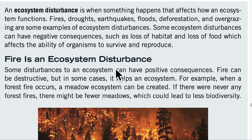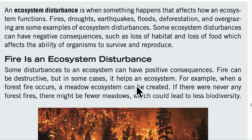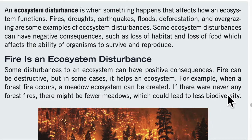Fire is an ecosystem disturbance. Some disturbances to an ecosystem can have positive consequences. Fire can be destructive, but in some cases it can help an ecosystem. For example, when a forest fire occurs, a meadow ecosystem can be created. If there were never any forest fires, there might be fewer meadows, which could lead to less biodiversity.